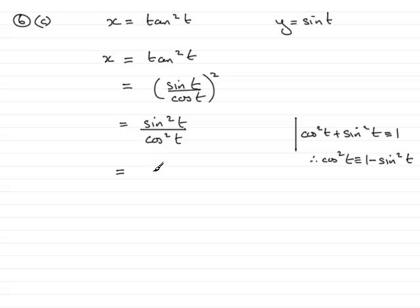So I have sin²t on top, and in the denominator, instead of cos²t, I have 1 - sin²t. This reduces to y² in the numerator and 1 - y² in the denominator.